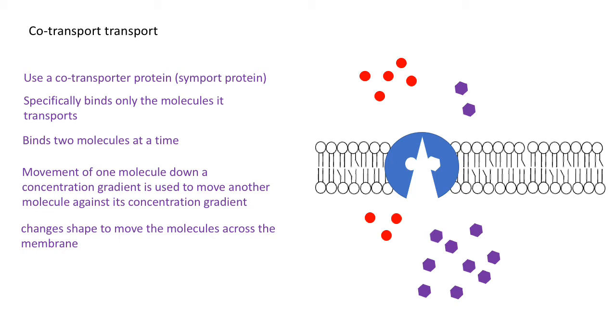Note that it's specific; it will only transport a certain type of molecule. For instance, the sodium-glucose transporter in the membrane of epithelial cells of the ileum will only bind sodium ions and glucose molecules.